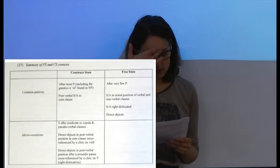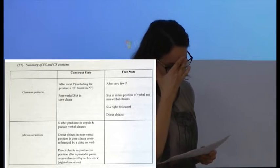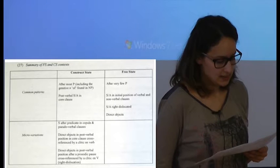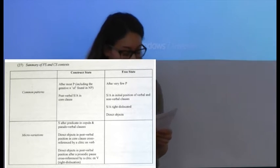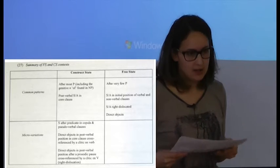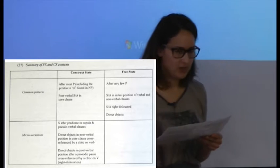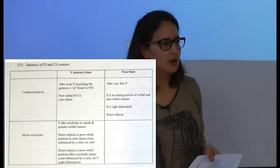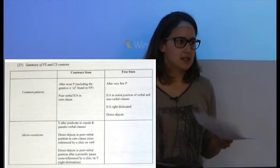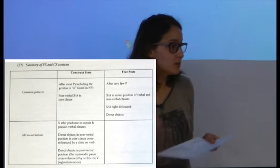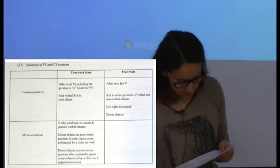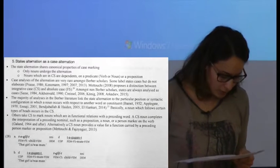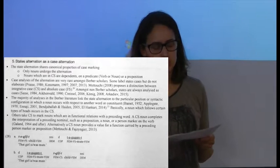Example 27 provides a table summarizing the contexts where we find the construct state versus the free state. Basically, there are two main contexts for the construct state: when the noun is a dependent of a preposition, or when the noun is a dependent of a verb. This resembles case marking, where case marks nouns dependent on different heads — typically a verb and a preposition.